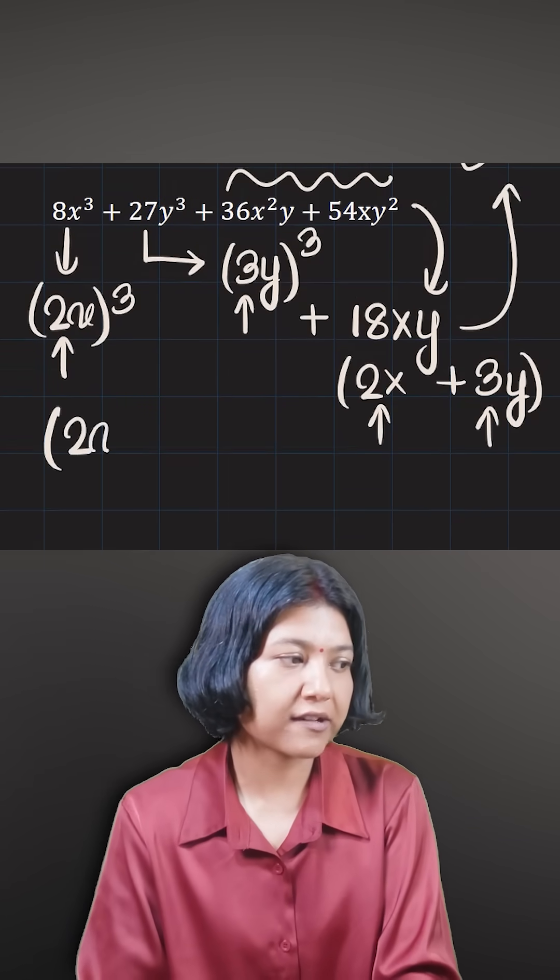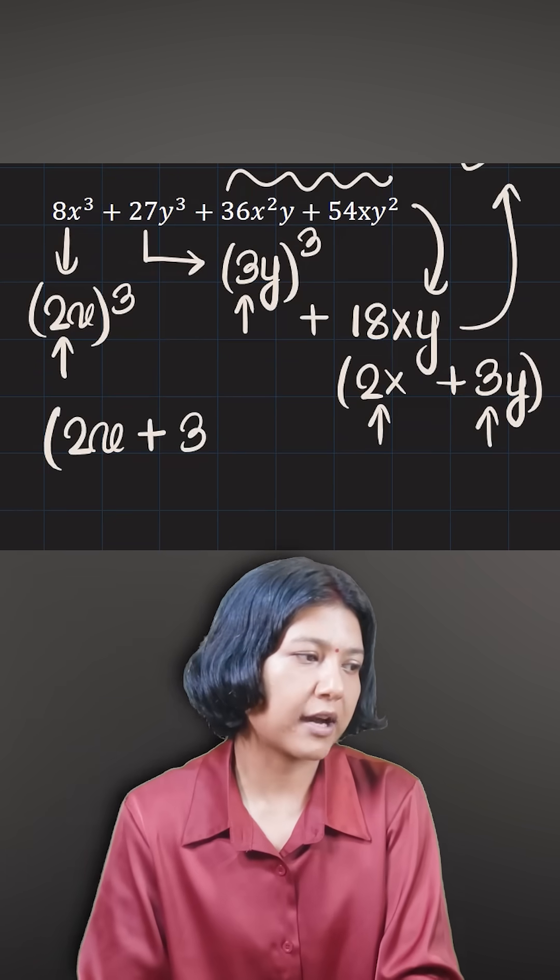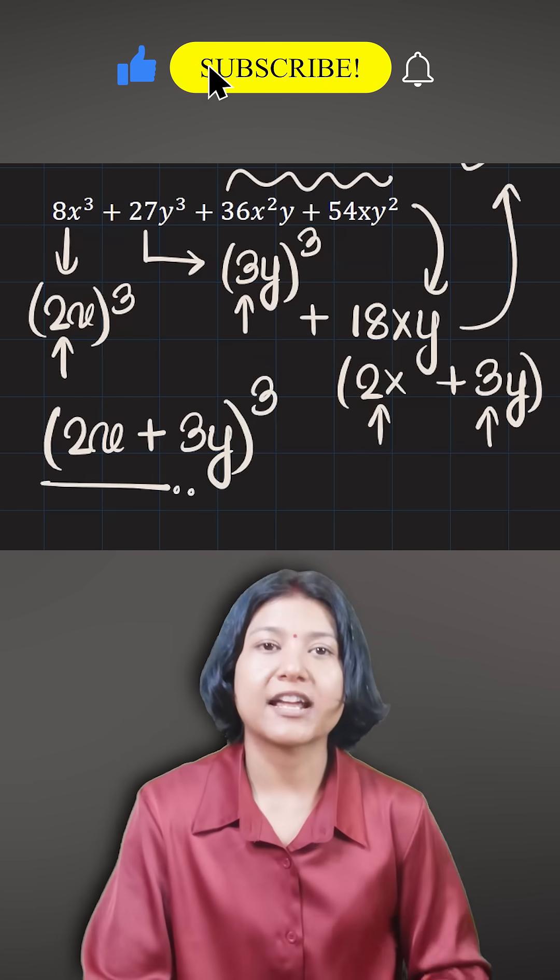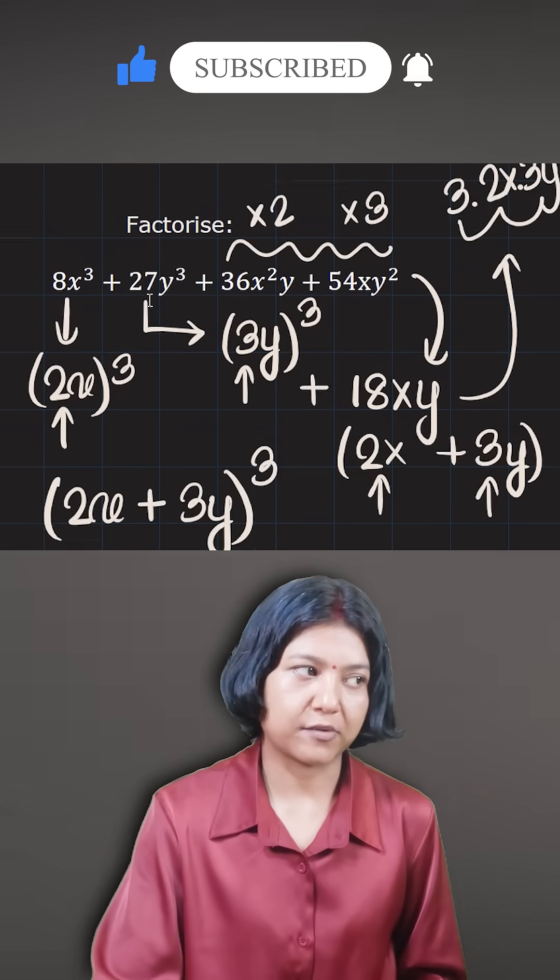Instead of a, we have 2x. Instead of y, we have 3y. So 2x plus 3y the whole cube. This is the factorized form we get for this question.